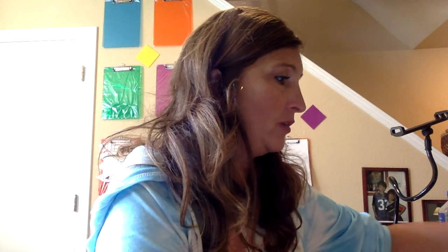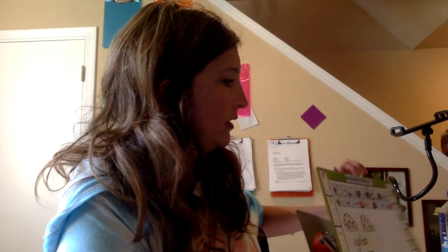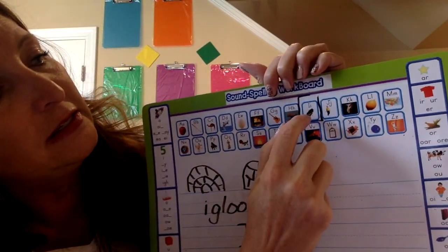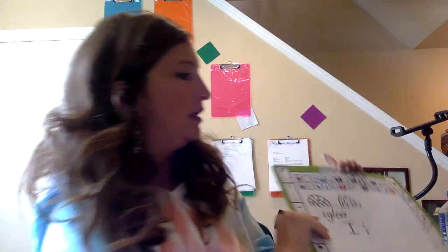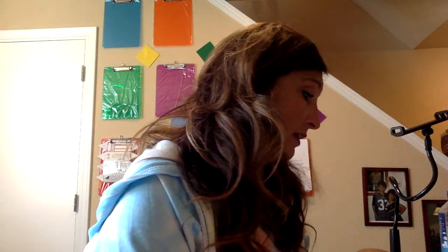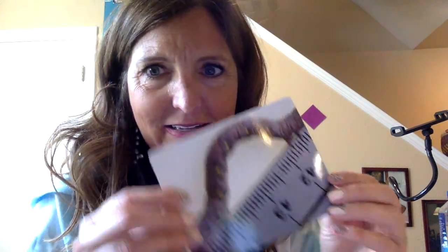I have some fun things to show you that start with the letter I. The first thing is an insect. On our alphabet chart it showed an insect that looks like a beetle. I'm going to show you another kind of insect — a ladybug. I love ladybugs. They eat the aphids in the yard, they're beautiful, and they don't bite. Ladybugs are probably my favorite insect. I have another thing that isn't an insect, but it does start with an I — it's an inchworm.